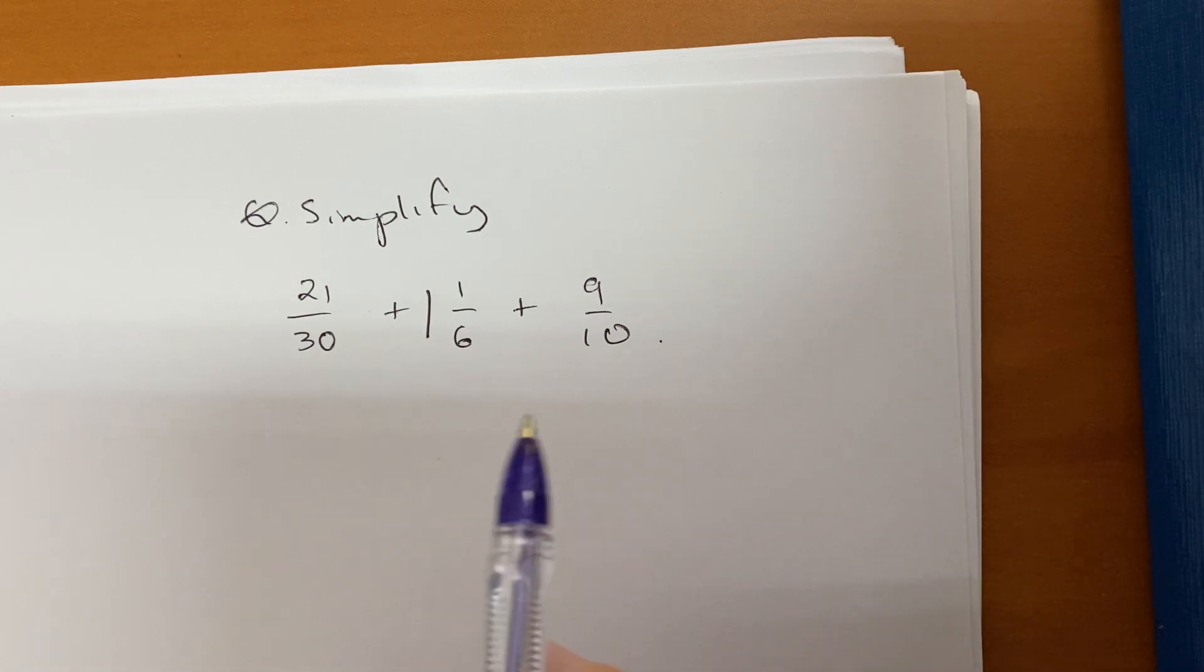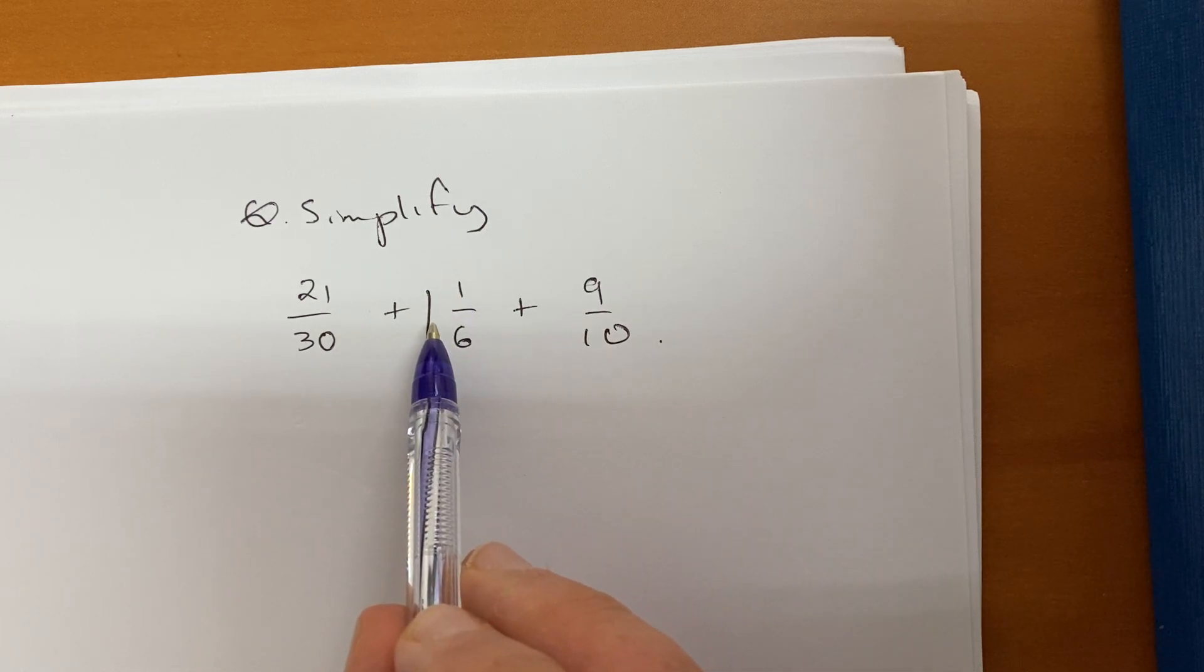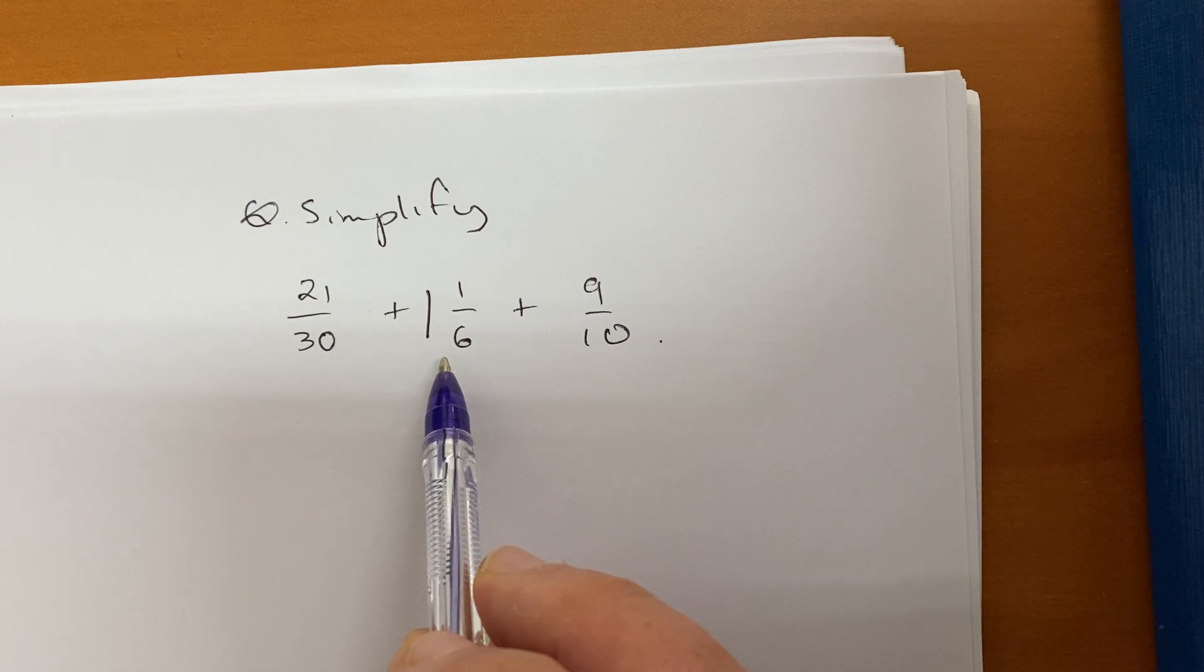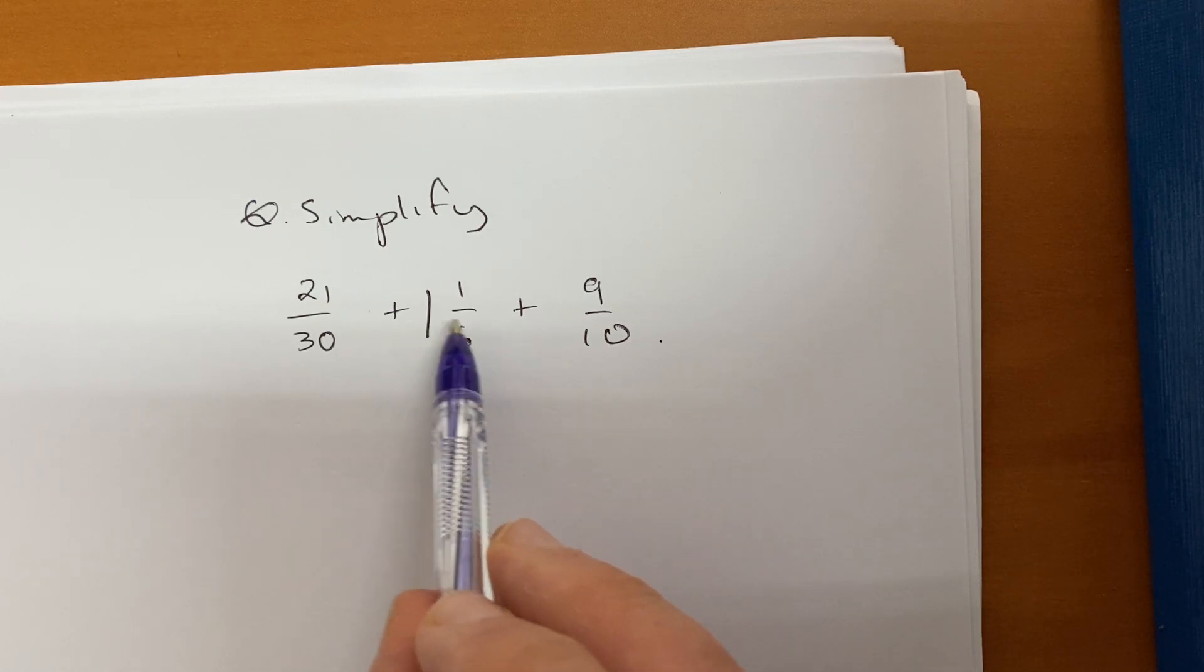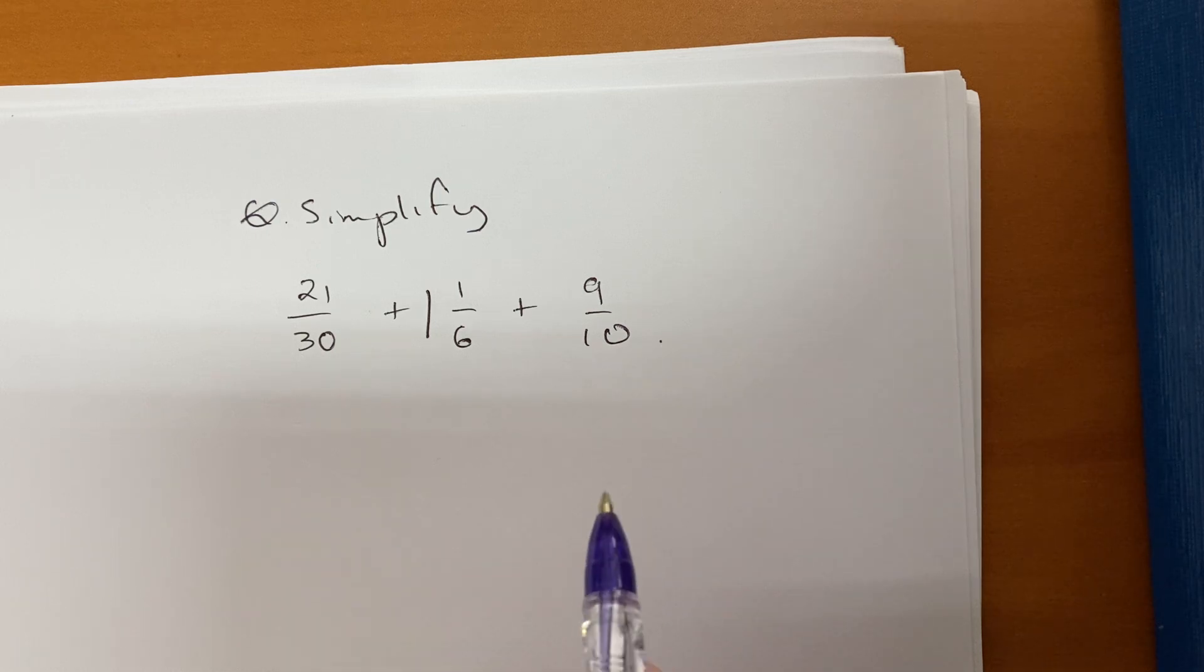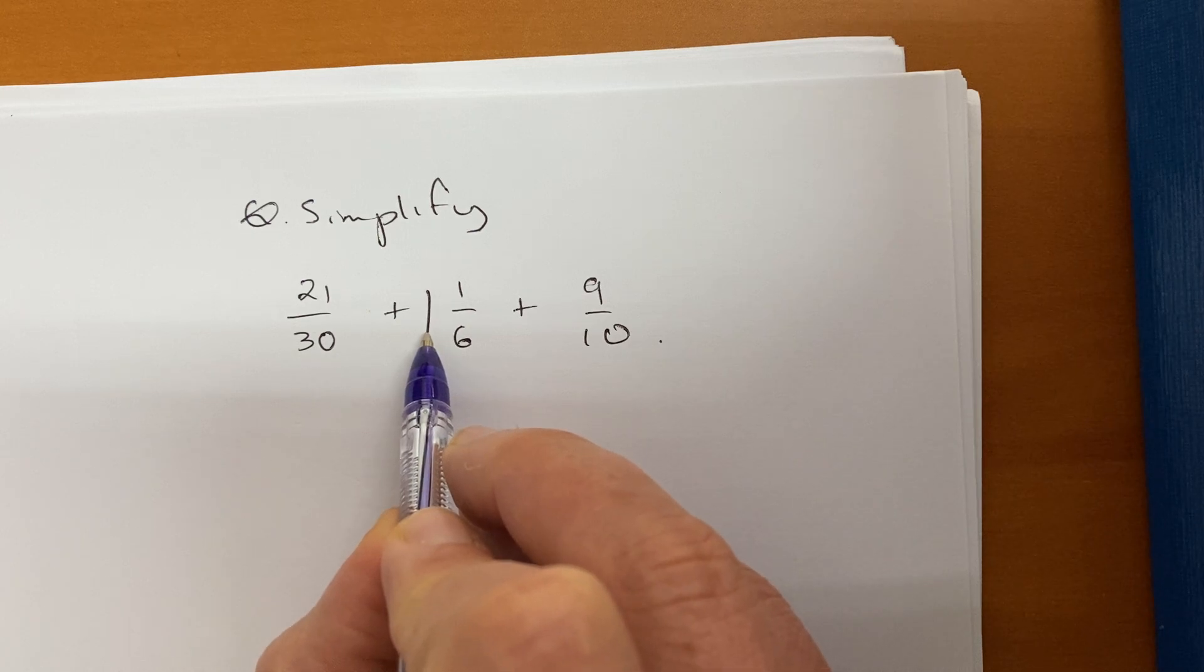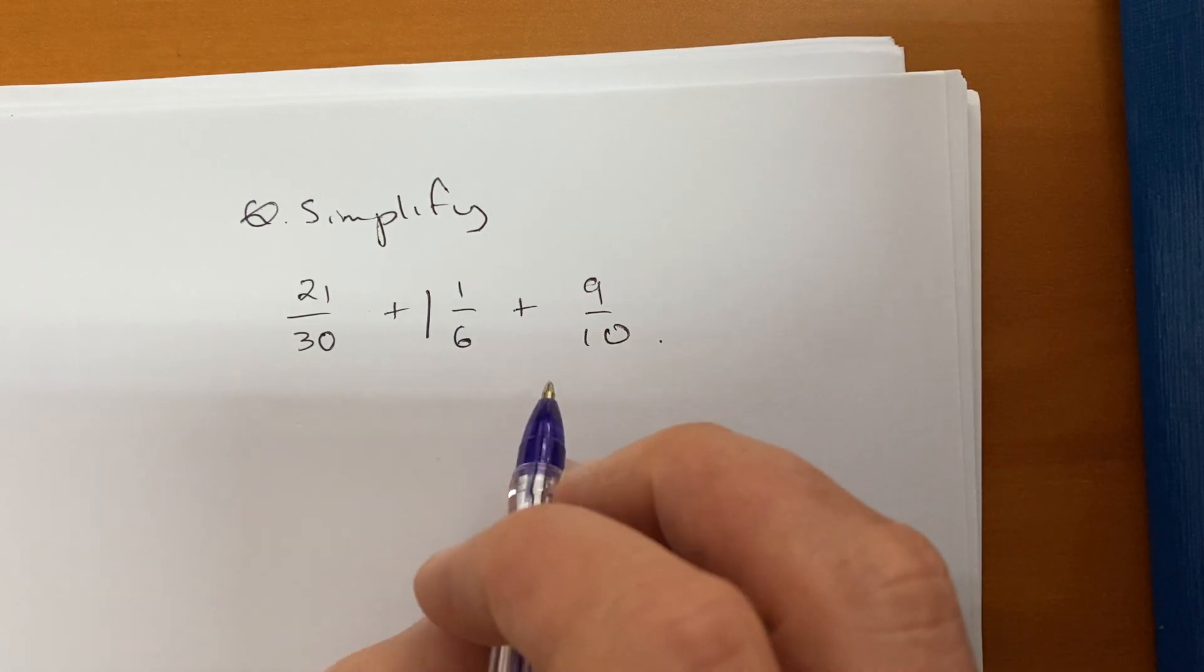But perhaps it's a good skill to get used to converting this to an improper fraction, especially when we're dealing with subtraction. In this case it's addition, but if we're dealing with subtraction it might be easier to have it as a proper fraction. So how many sixths are in one? There's six sixths, so one times six, add that on, that comes to seven over six.